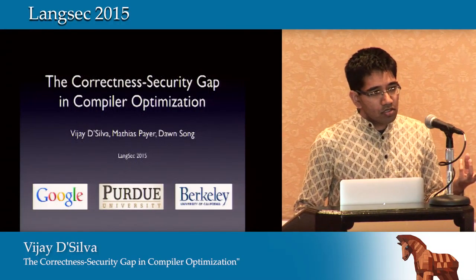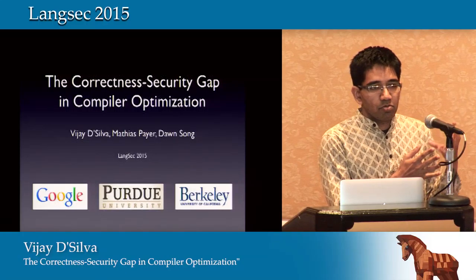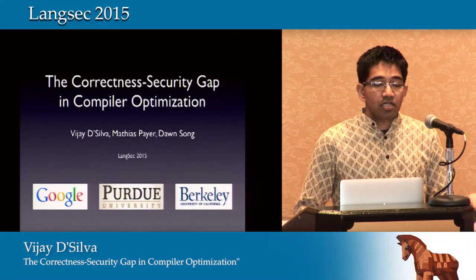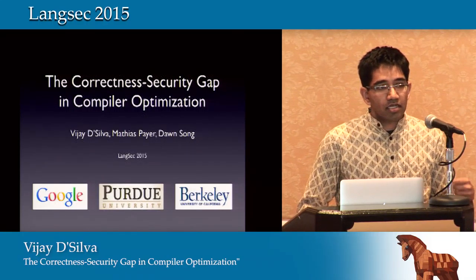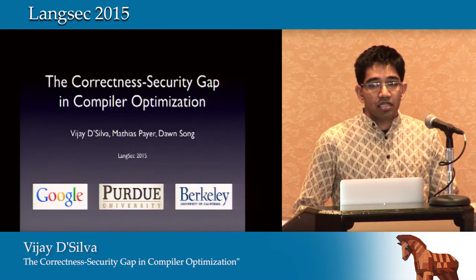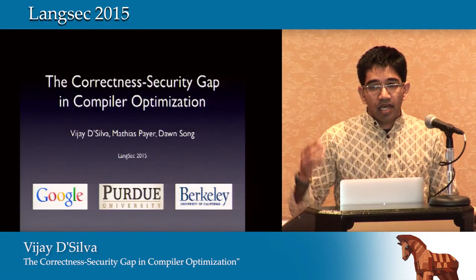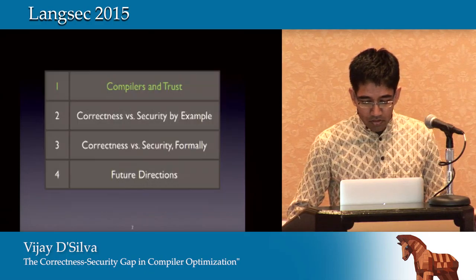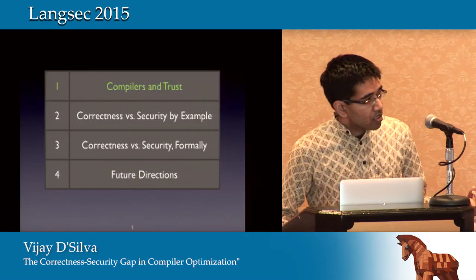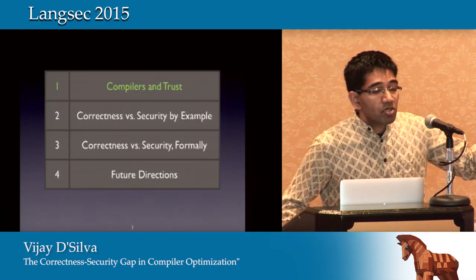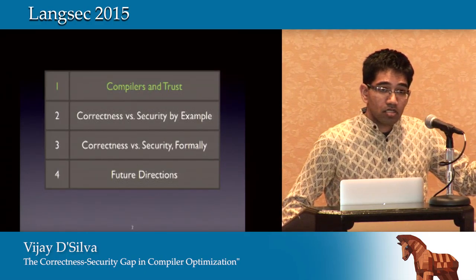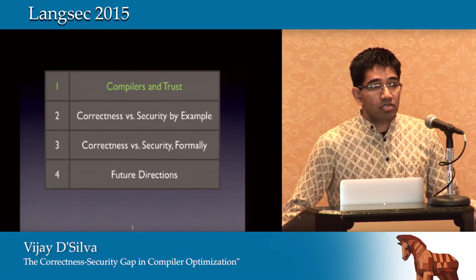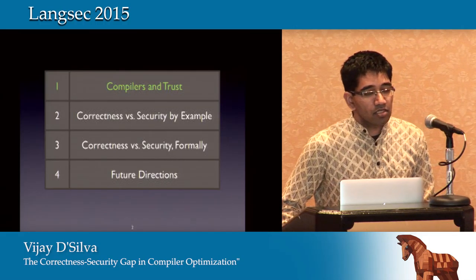It's about a gap that happens between what a compiler — even when correctly implemented and correctly designed — can give you in terms of security guarantees you put into your code, and whether those are preserved. I'll give you some examples: a couple are known, but then there are others that are not known, and that's what we discuss in the paper.